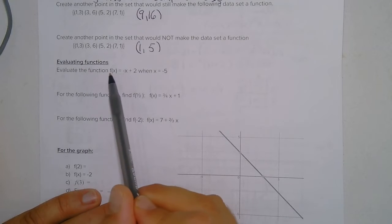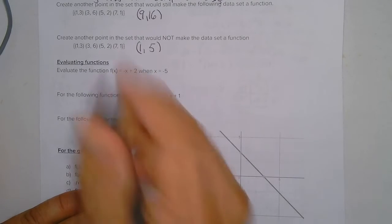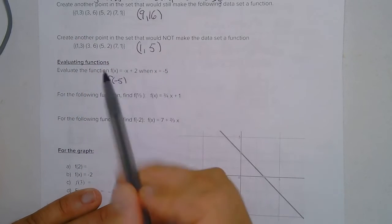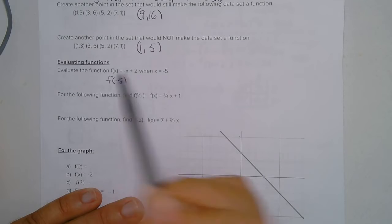So now here we're going to evaluate the function f of x when x is negative 5. So this would be f of negative 5, which just says the value of the function if x is negative 5.